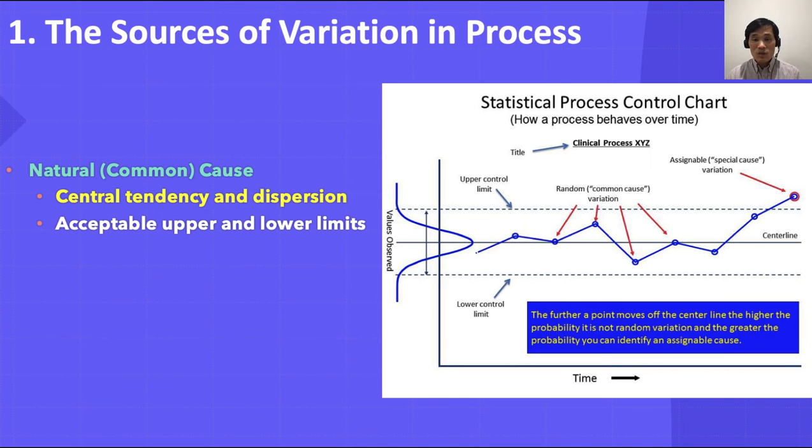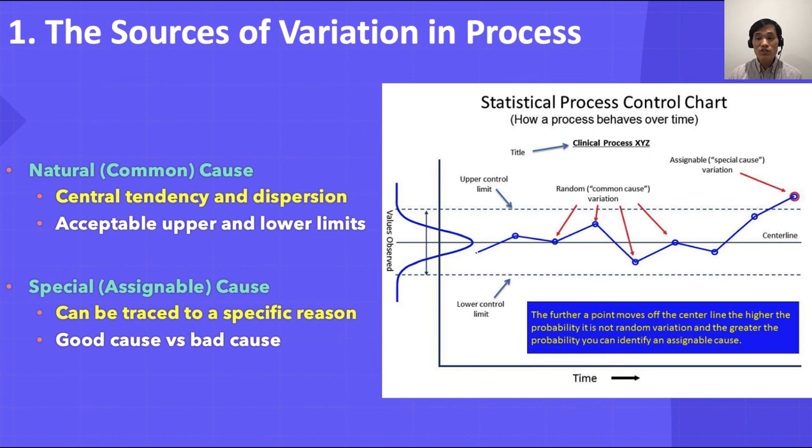However, say one day the majority of students did not come on time. It's an unusual case and one can suspect something unusual happened, such as a traffic accident or inclement weather. These are assignable causes. Natural or common causes affect virtually all production or service processes, whereas assignable causes can be generally traced to specific causes. The objective is to discover when assignable causes are present and eliminate the bad causes and incorporate the good causes into the system.